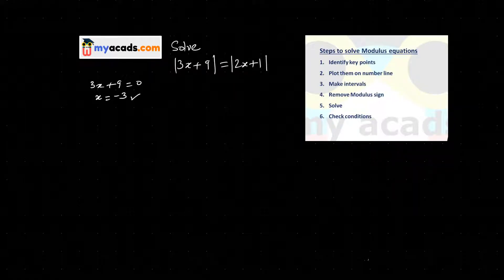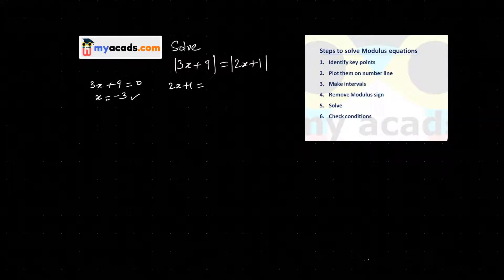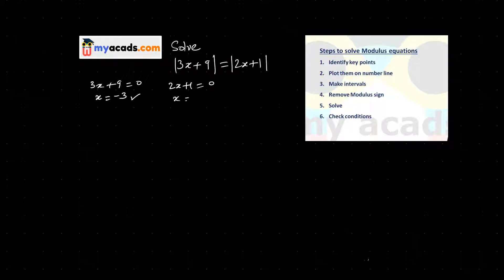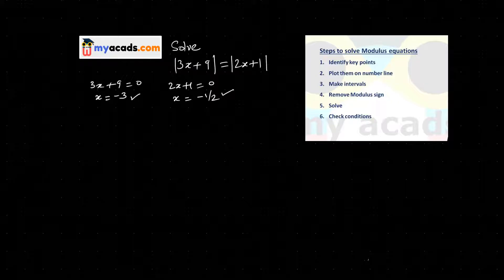What is my second key point? Inside the second mod we have 2x plus 1. I will set this equal to 0, so x equals minus 1 by 2. So these are my two key points: x equals minus 3 and x equals minus 1 by 2. This completes my first step.